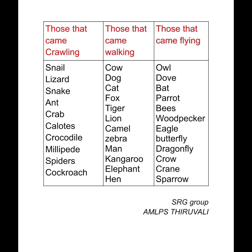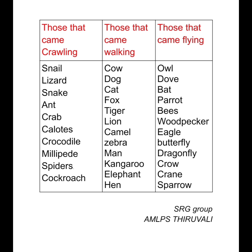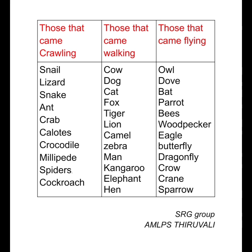Animals can be classified by their locomotion: crawling, walking, and flying. That is what we are going to learn.